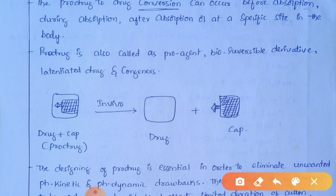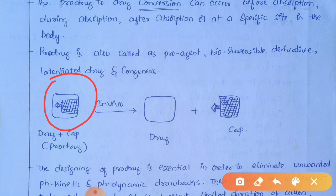The active form of the drug can be attached with a cap. The cap blocks the active functional groups of the drug molecule, so we call it a prodrug. When it enters into the body — in vivo — the prodrug is converted into the active form of the drug, and the cap which was used for blocking the functional groups is separated and should be easily eliminated from the body.